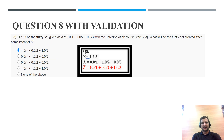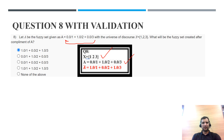Question 8: now the universe of discourse changes to X equals {1, 2, 3}. Fuzzy set A is given. The question asks: what will be the fuzzy set after complement of A? Complement of 0 is 1; complement of 1 is 0; complement of 0 is again 1. From the options, option A is the correct answer.